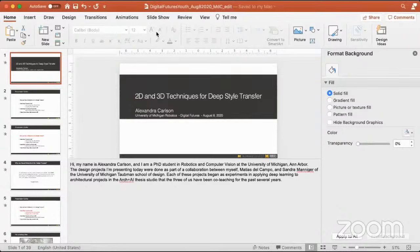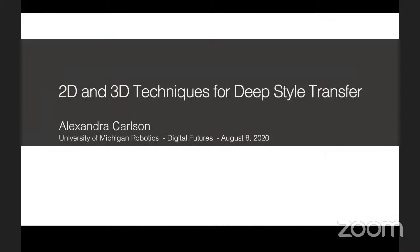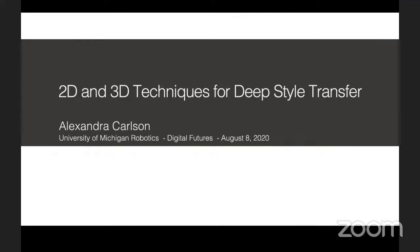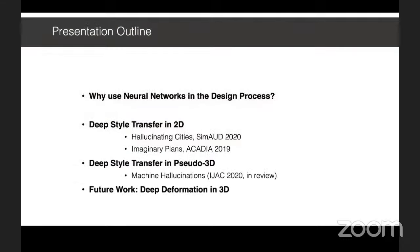My name is Alexander Carlson — I go by Alexa — and I'm a PhD student in robotics and computer vision at the University of Michigan in Ann Arbor. The design projects I'm presenting today were done as part of a collaboration between myself, Mathias, and Sandra from the University of Michigan Taubman School of Design. Each of these projects began as experiments in applying deep learning to architectural projects in the Arch plus AI thesis studio that the three of us have been co-teaching for the past several years. I'm going to be covering the following projects and will briefly discuss our future and current work.